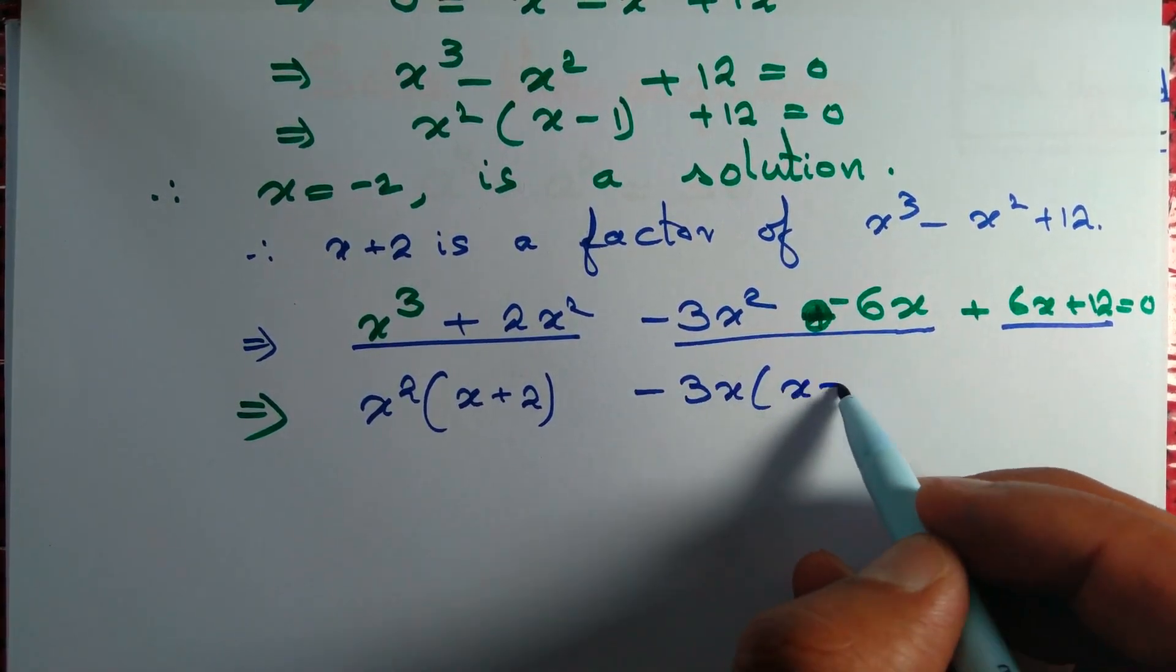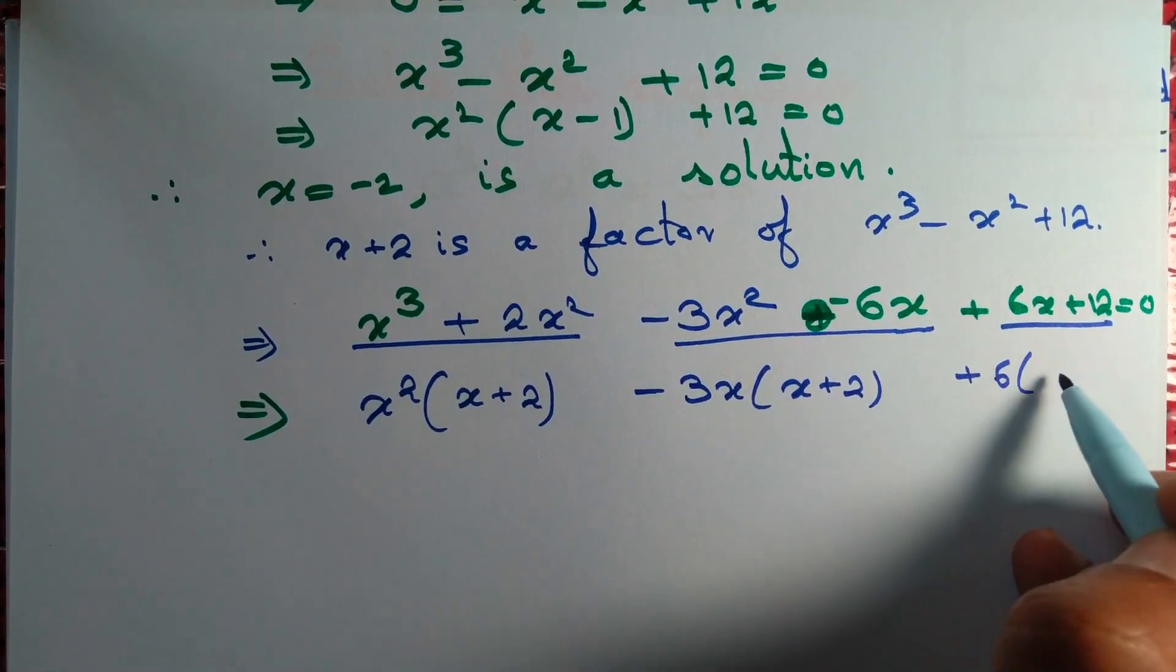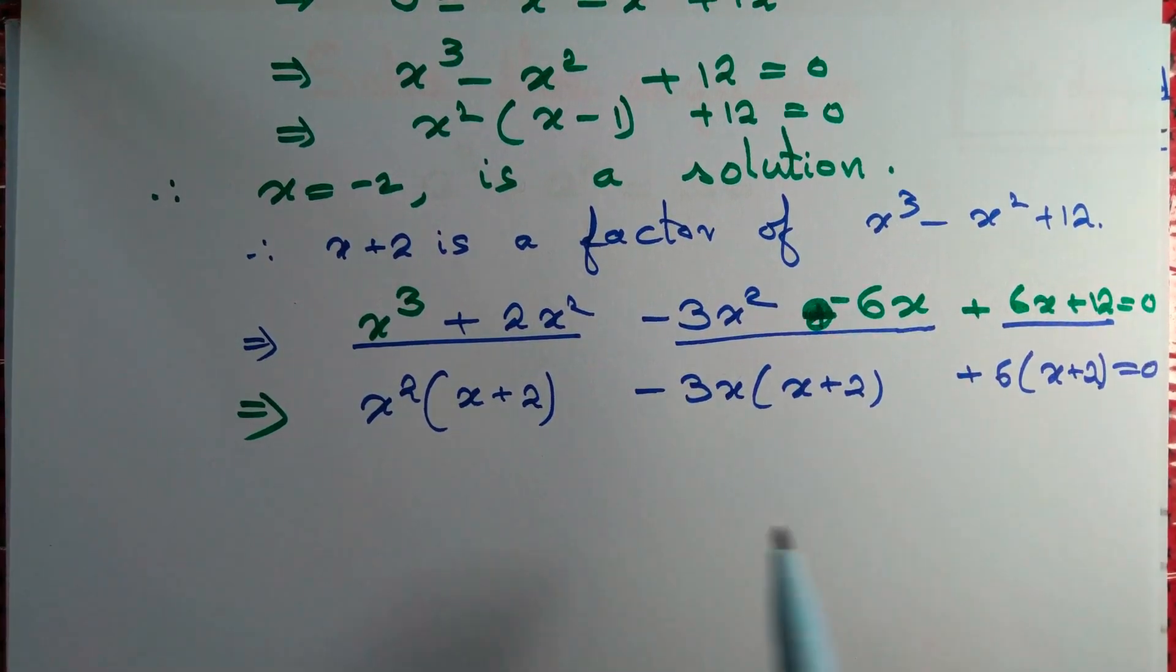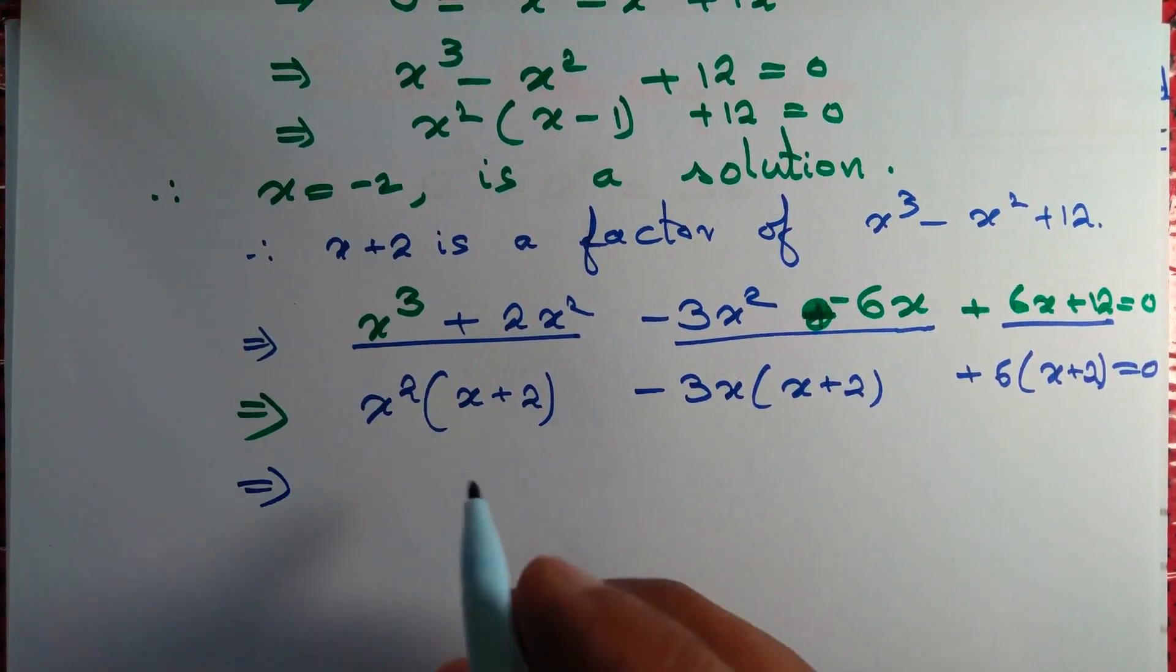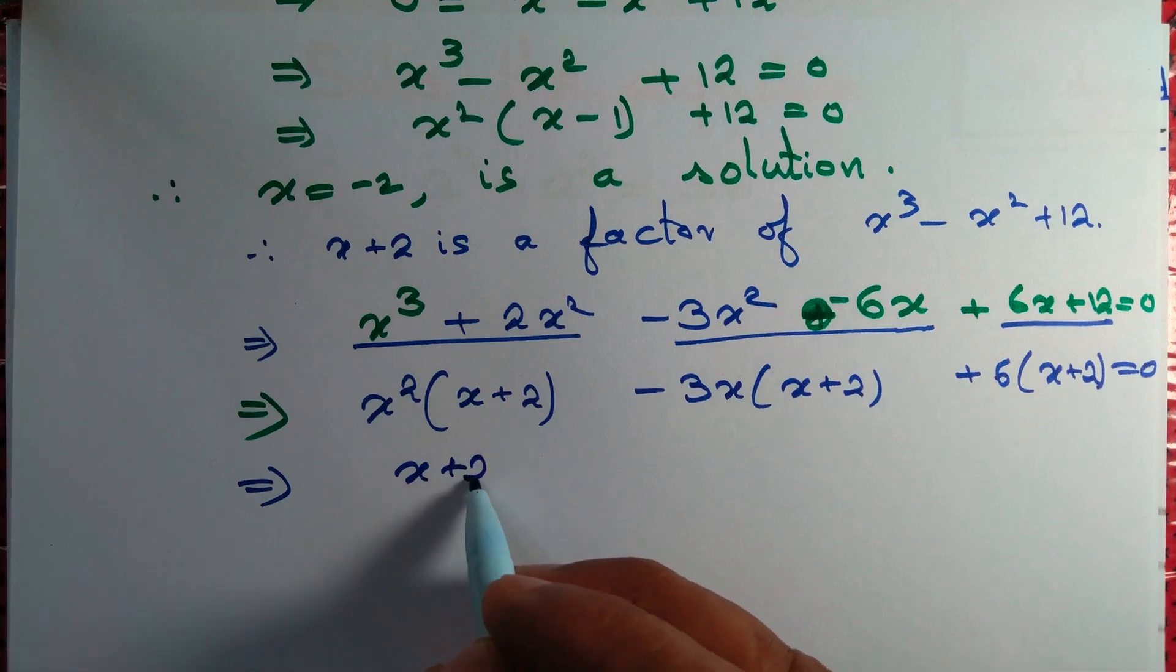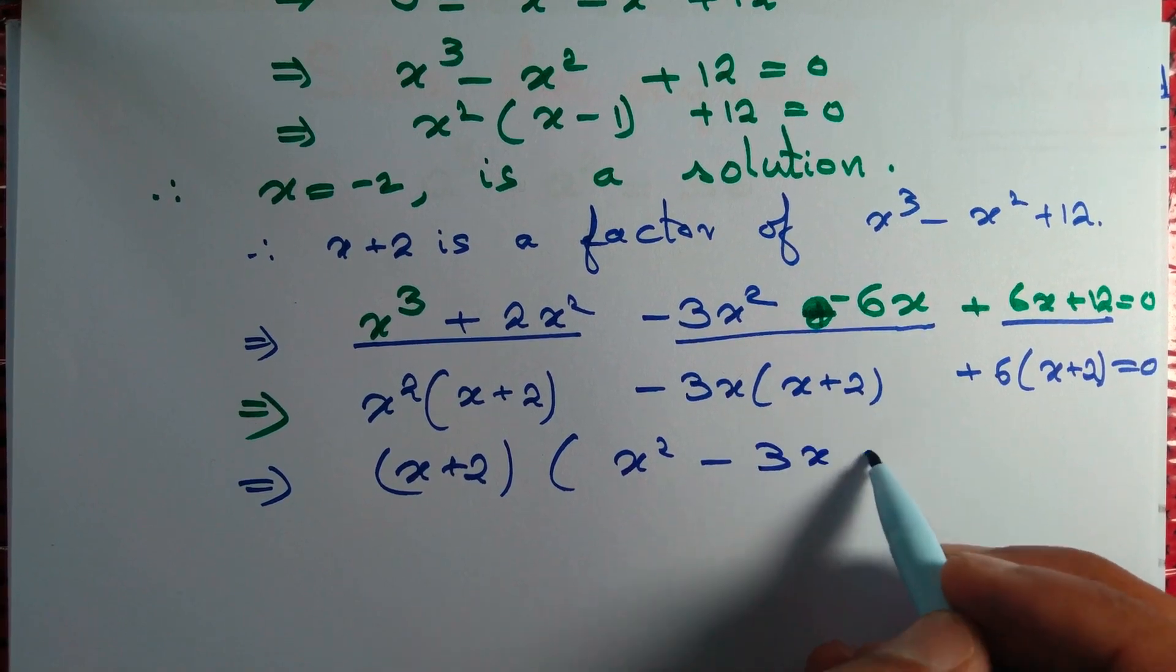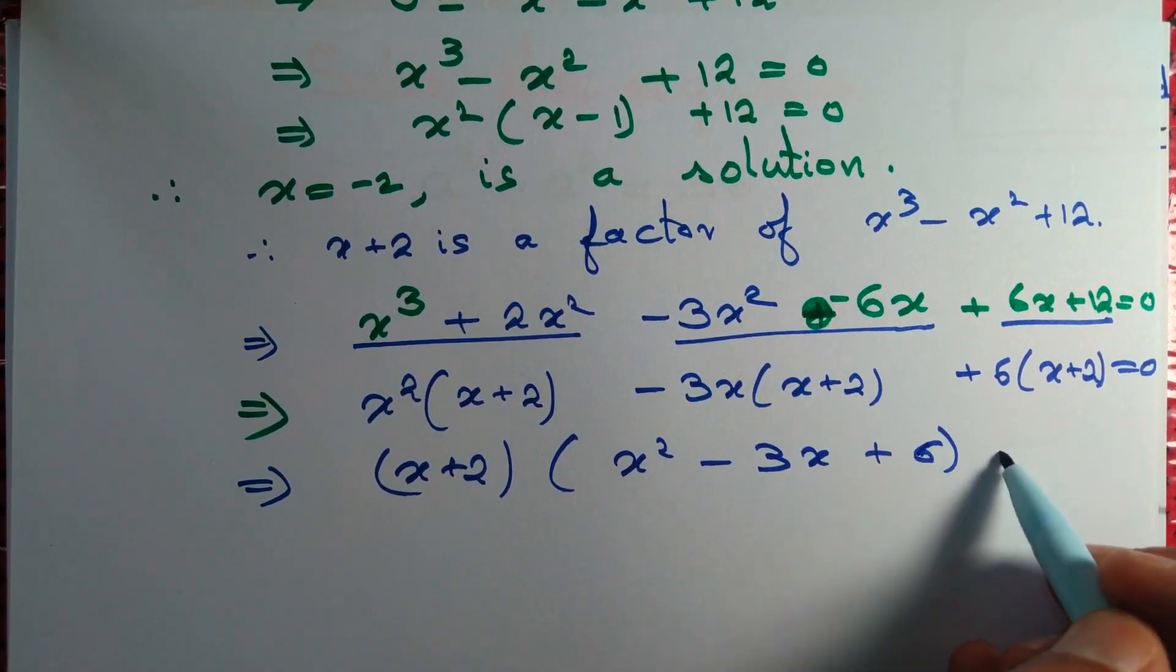And lastly, we take 6 common. We again get x plus 2. Now we take x plus 2 common throughout. So we have x plus 2 whole thing into x square minus 3x plus 6 equals 0.